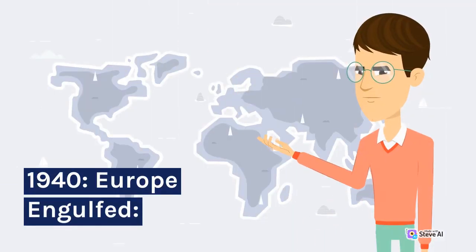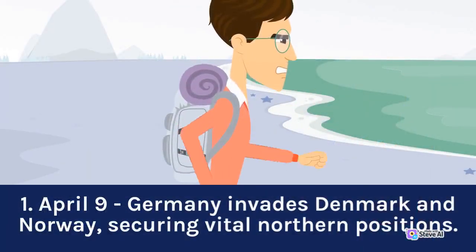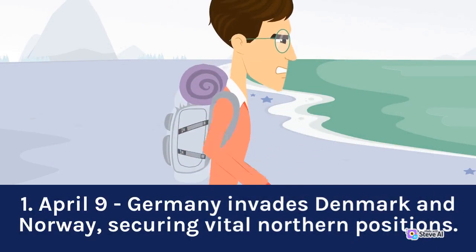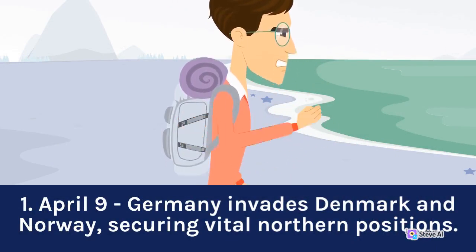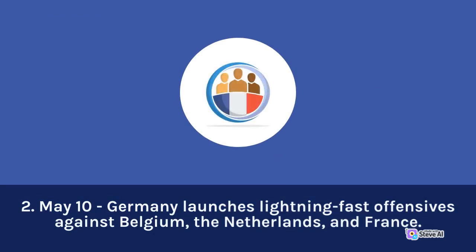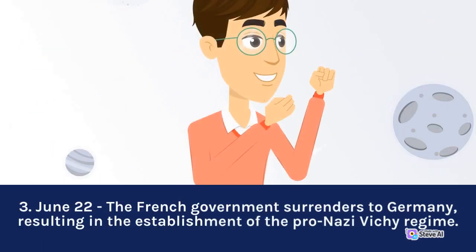1940 — Europe Engulfed: April 9, Germany invades Denmark and Norway. May 10, Germany launches lightning-fast offensives against Belgium, the Netherlands, and France. June 22, the French government surrenders to Germany, resulting in the establishment of the pro-Nazi Vichy regime. July 10, the Battle of Britain begins as German air forces unleash a series of devastating attacks on British cities.